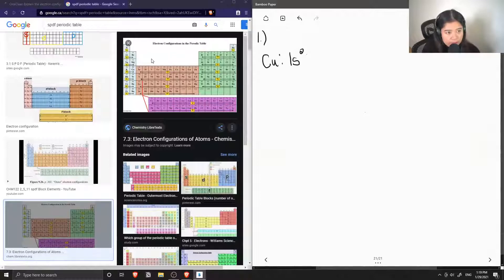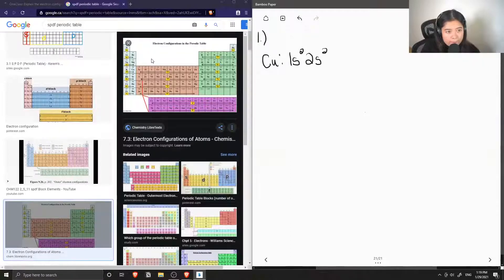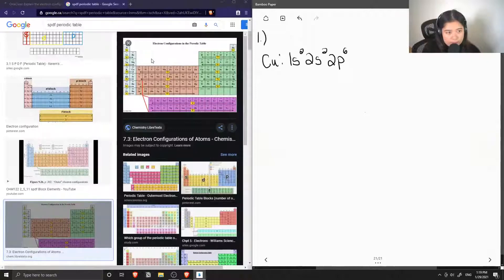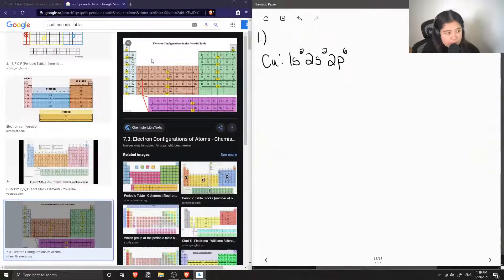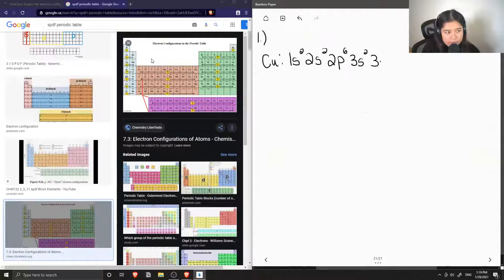So now we're on to the next row. Row two, block S, and again, two electrons will fill this orbital. Now we move over to the 2P section. In the P orbital, this can house six electrons, so we write 2P6. Then to the next row, we write 3S2, and then moving over, we write 3P6.